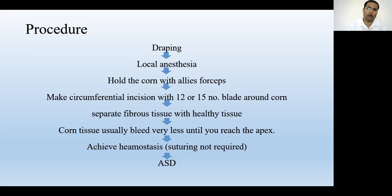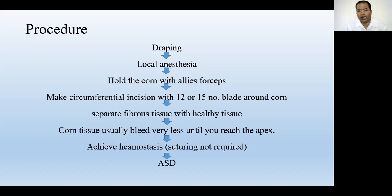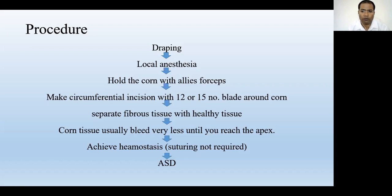Apply gentle traction over the corn with the Alice forceps and start separating the hard hyperkeratinous tissue from the healthy tissue. Separation is easy because the hard tissue is visually distinguishable — hyperkeratinous tissue is always whitish with no blood supply. Remove the complete corn down to the root; do not leave any single part inside, as there is a high chance of recurrence.